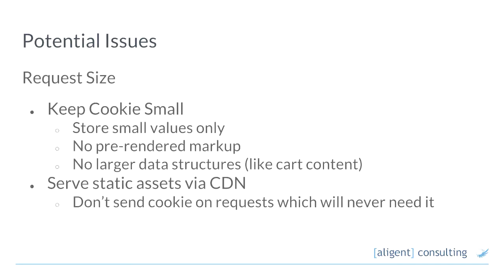I spent a lot of time pointing out the issues with other approaches, so it's only fair that I go through and poke holes in this one and tell you when you probably shouldn't use it. The one I've already hinted at is cookie size. We want to try and keep the cookies small because they're going to go back to the server on every request. Bandwidth in Australia is suboptimal, and upstream bandwidth going back to the server is the worst case scenario.